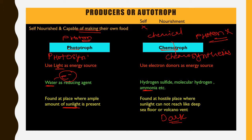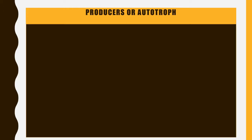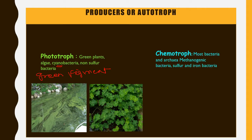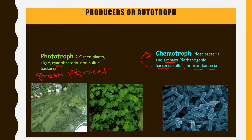Classical examples of phototrophs include green plants, algae, and cyanobacteria. These organisms contain the green pigment chlorophyll, which helps them absorb photons and perform photosynthesis. Examples of chemotrophs include archaea, methanogenic bacteria, and sulfur-iron bacteria. These do not contain chlorophyll and therefore cannot perform photosynthesis; instead they perform chemosynthesis. Producers' basic job is to make food, which is later consumed by other organisms in the ecosystem.